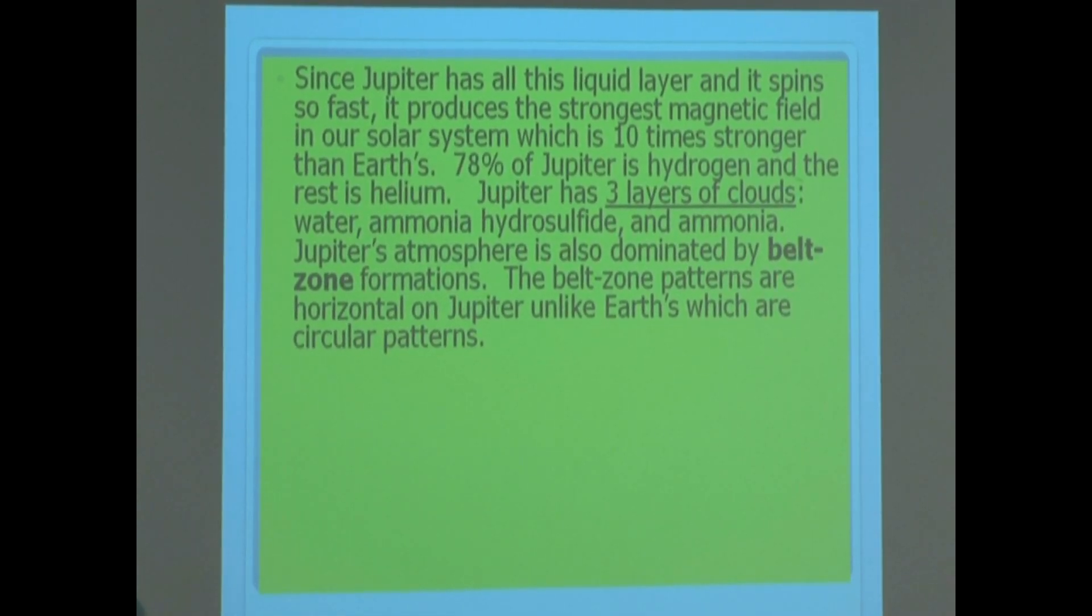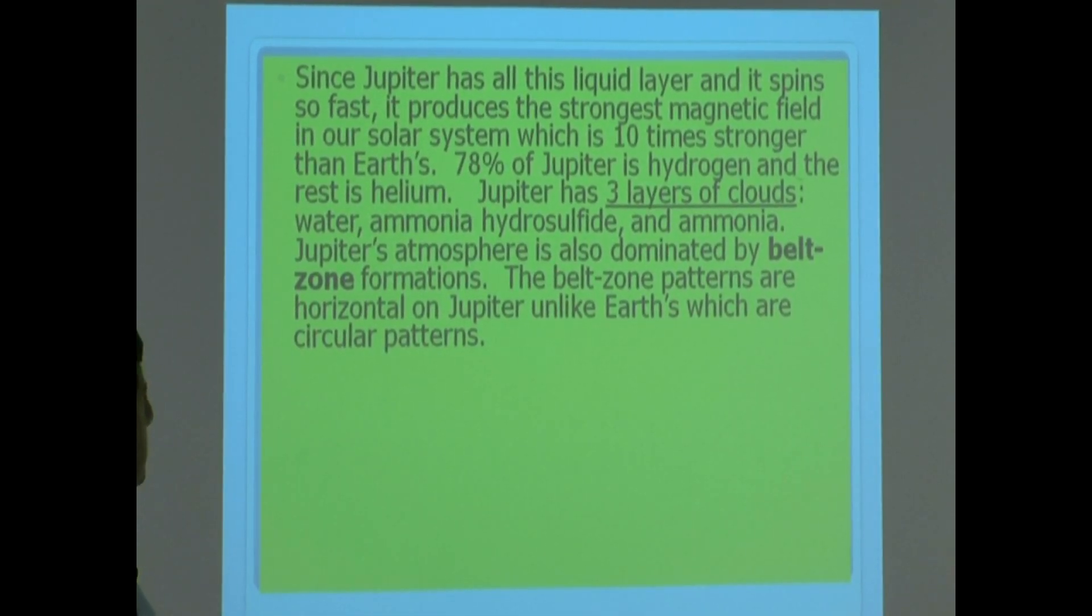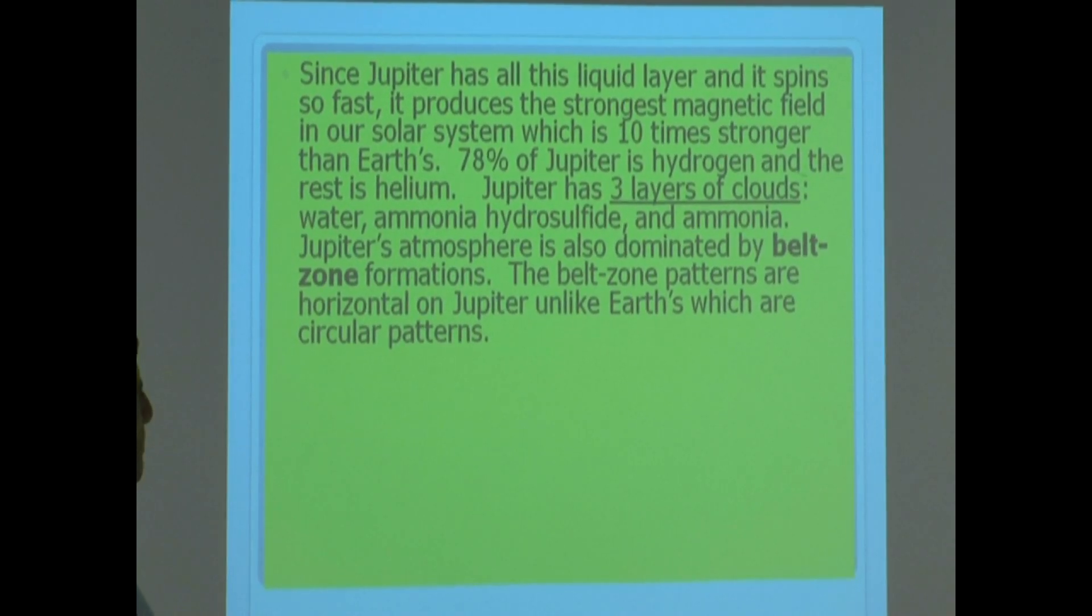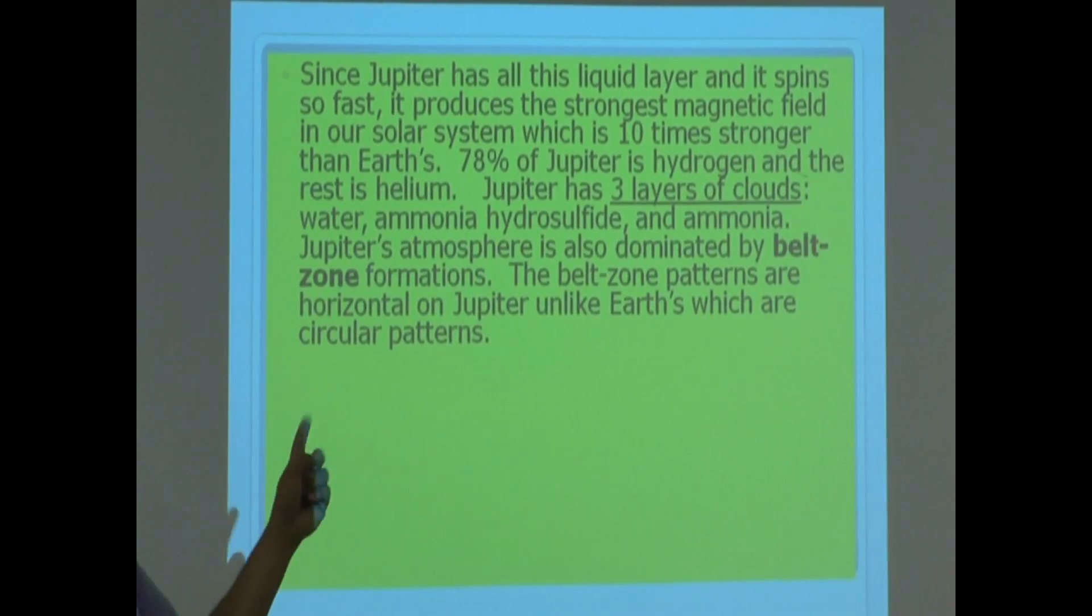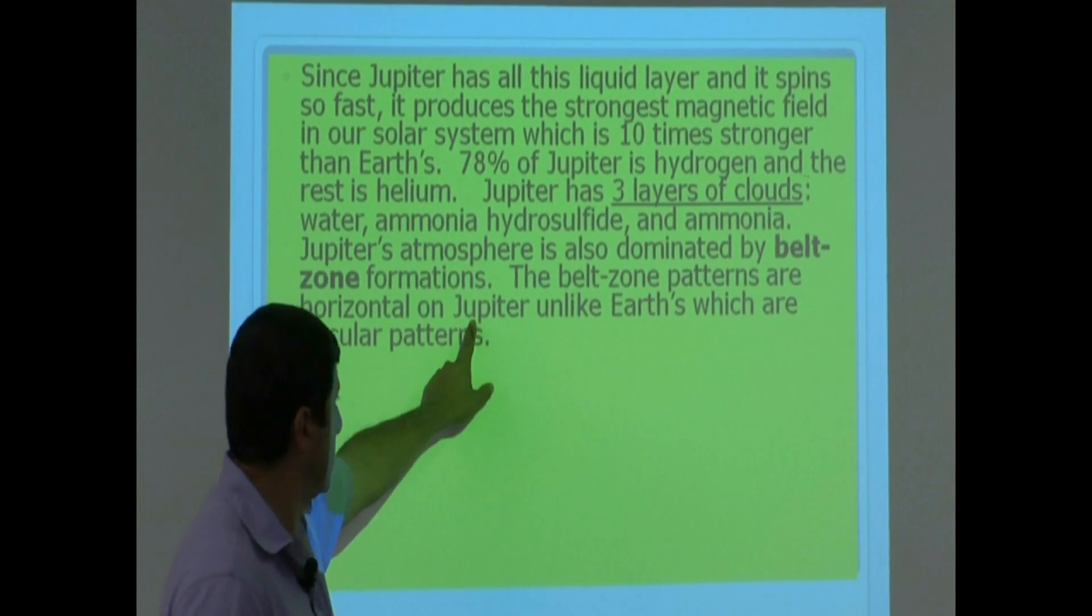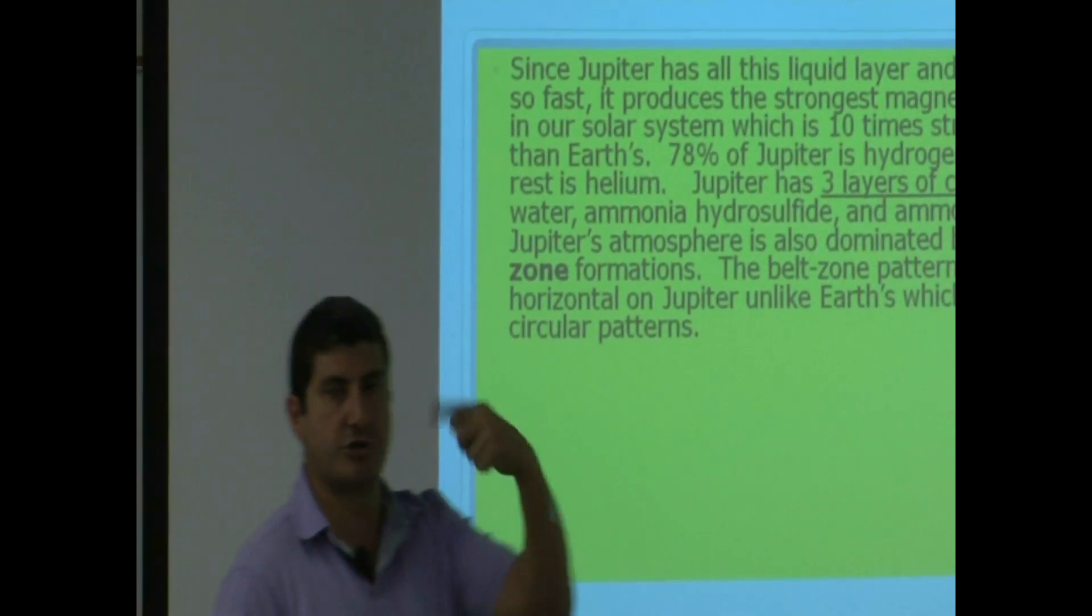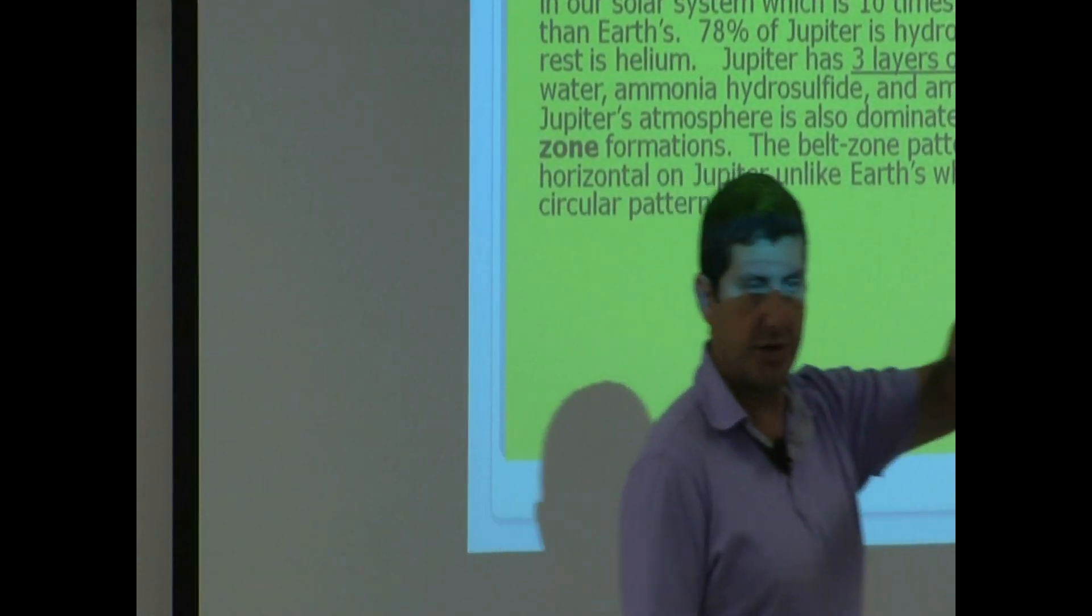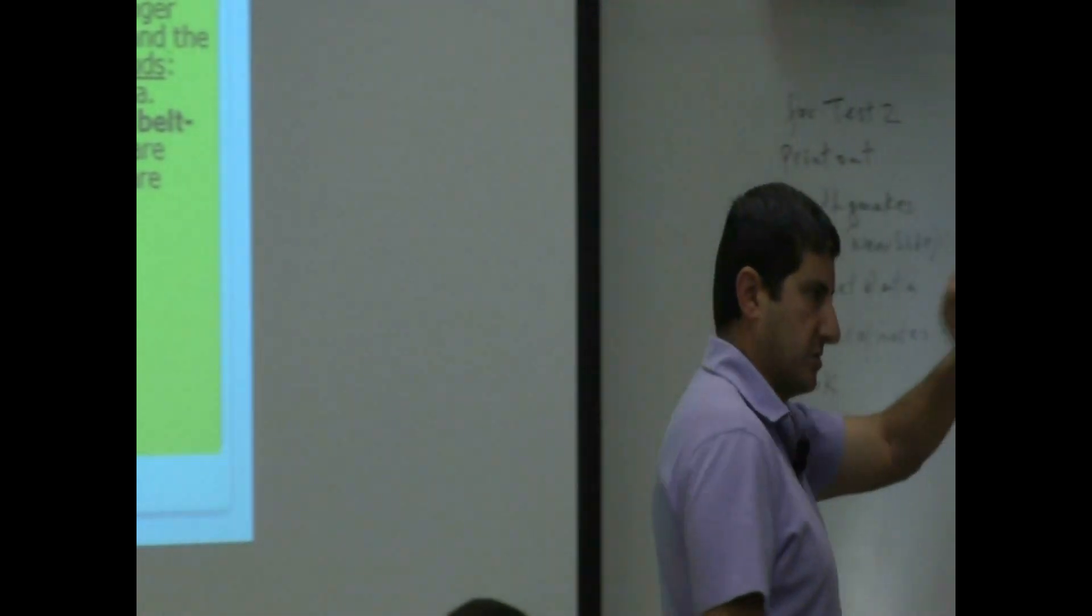Jupiter's atmosphere is also dominated by belt's zone formations. The belt's zone patterns are horizontal on Earth, on Jupiter, unlike Earth's which are circular. Okay? Earth's belt zones are circular on Jupiter, horizontal.